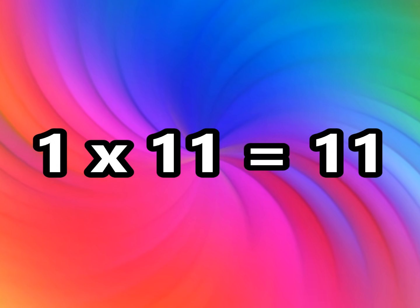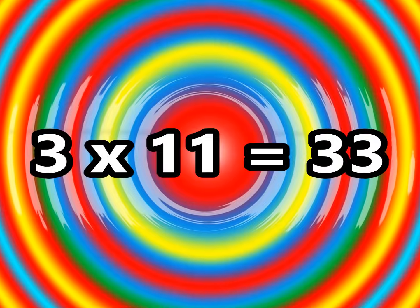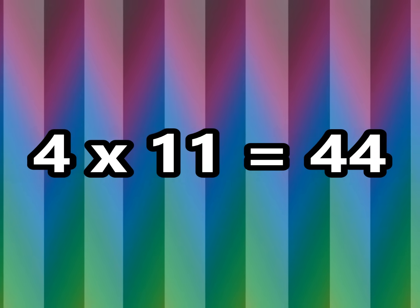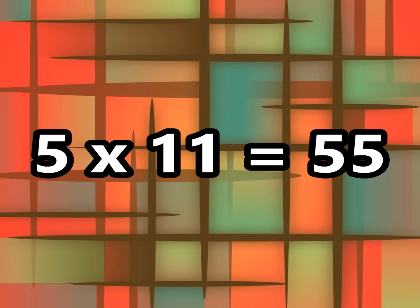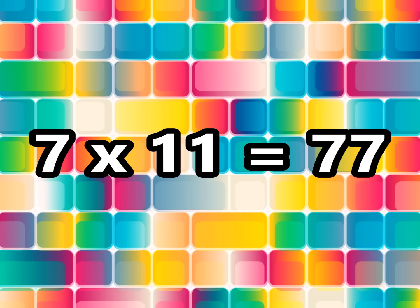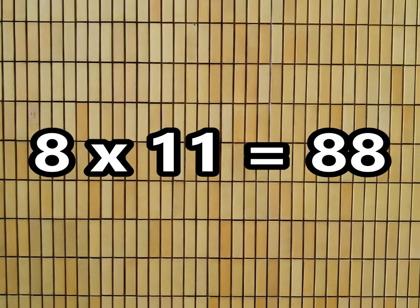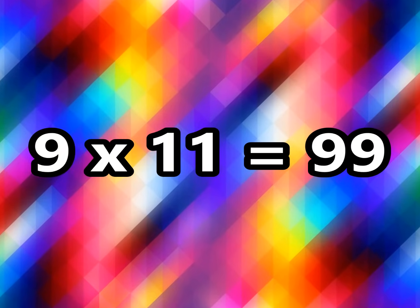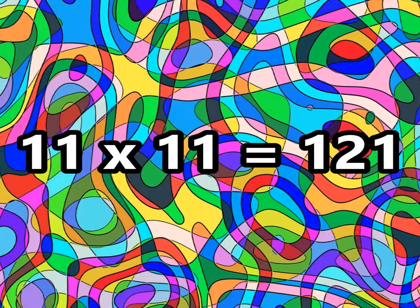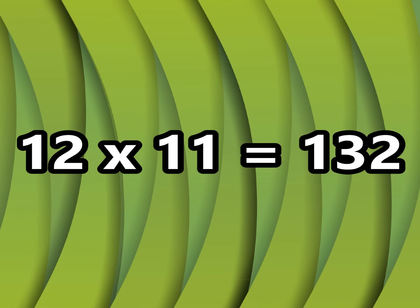1 times 11 is 11, 2 times 11 is 22, 3 times 11 is 33, 4 times 11 is 44, 5 times 11 is 55, 6 times 11 is 66, 7 times 11 is 77, 8 times 11 is 88, 9 times 11 is 99, 10 times 11 is 110, 11 times 11 is 121, and 12 times 11 is 132.